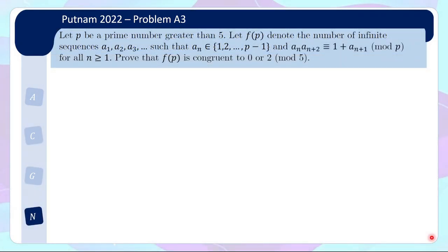Okay, let's take a look at A3 which is a number theory problem. So stay tuned for this problem because you will realize how surprising this problem actually is. So let p be a prime number greater than 5. Let f(p) denote the number of infinite sequences a_1, a_2, a_3, and so on, such that a_n draws from 1 to p minus 1. Okay, so basically it's between 1 to p minus 1. And the sequence satisfy a_n·a_n+2 congruent to 1 plus a_n+1 (mod p), for all n greater than or equal to 1. Prove that f(p), which is the number of possible such sequences, is congruent to 0 or 2 mod 5.